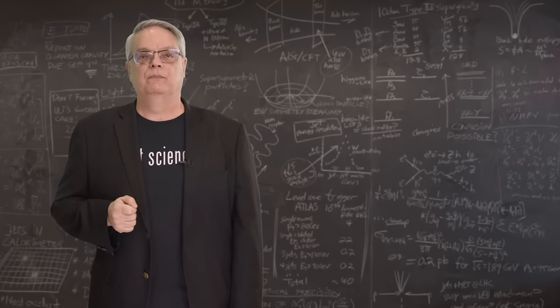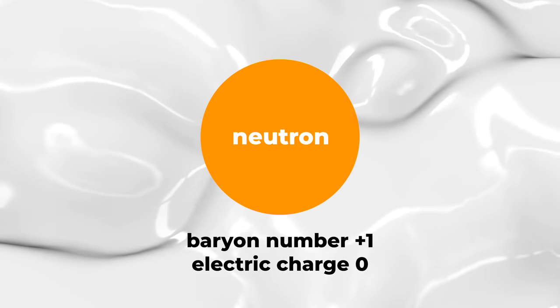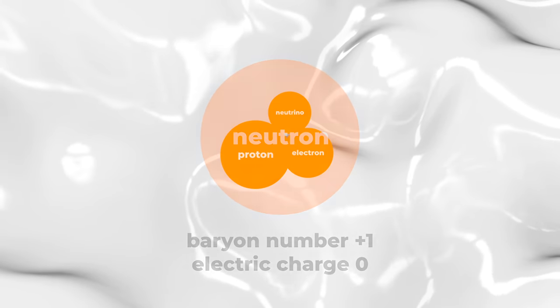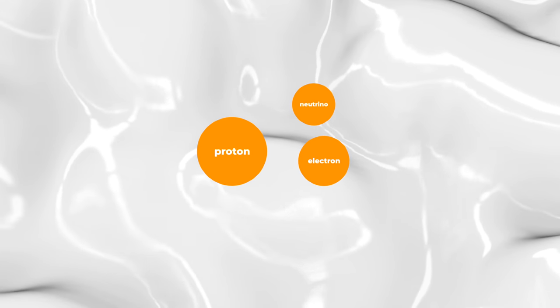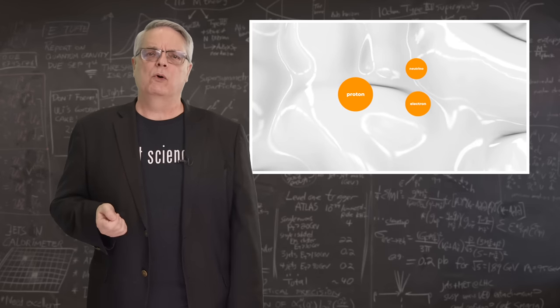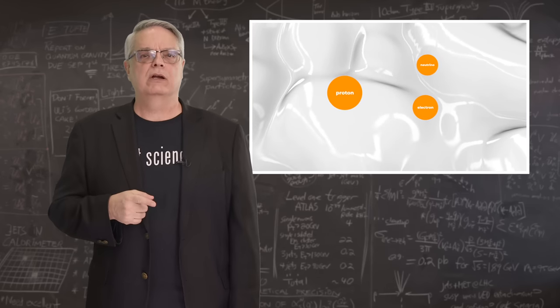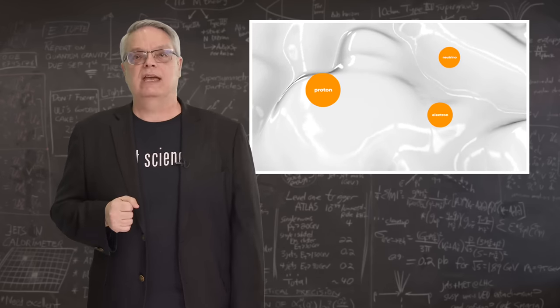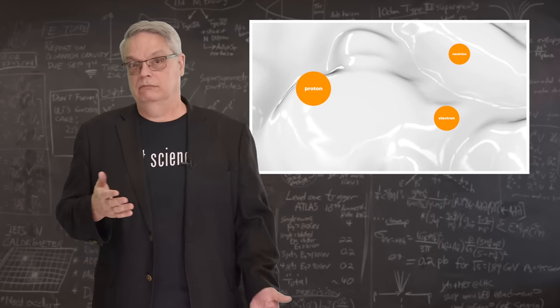Let me give you an example. In the case of neutron decay, what happens is the neutron turns into a proton, an electron, and an antimatter neutrino. Since both proton and neutron have baryon number of plus one, baryon number is conserved in the decay, plus one before and one after.